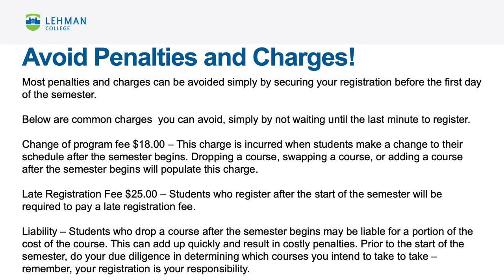Most penalties and fees are easily avoidable. You can avoid these by not waiting until the last minute to sort your registration. Common avoidable charges include: a Change of Program fee of $18, incurred when students make a change to their schedule after the semester begins — dropping, swapping, or adding a course will populate this charge. A Late Registration fee of $25 applies to students who register after the start of the semester. Students who drop a course after the semester begins may also be liable for a portion of the cost of that course, which can add up quickly. Prior to the start of the semester, determine which courses you intend to take — your registration is your responsibility.